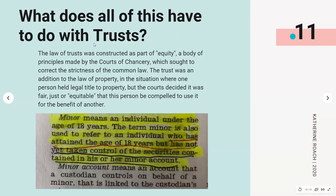What does all this have to do with trusts? The law of trust was constructed as part of equity — a body of principles made by the courts of chancery which sought to correct the strictness of the common law. The trust was an addition to the law of property in situations where one person held legal title to property but the courts decided it was fair, just, or equitable that this person be compelled to use it for the benefit of another. So the trust section falls under equity but deals with the law of property.